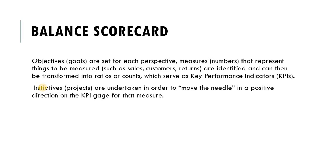Objectives are set for each perspective and measures — representing things to be tracked such as sales, customers, and returns — are identified and can then be transferred into ratios or counts which serve as Key Performance Indicators (KPIs). We analyze and find those key attributes from the data and apply data mining techniques so we can balance all areas of the organization. Initiatives or projects are undertaken to move the needle in a positive direction on those KPIs, and the results are used to improve the overall balance of the whole organization. That is why data mining is used in the Balanced Scorecard.